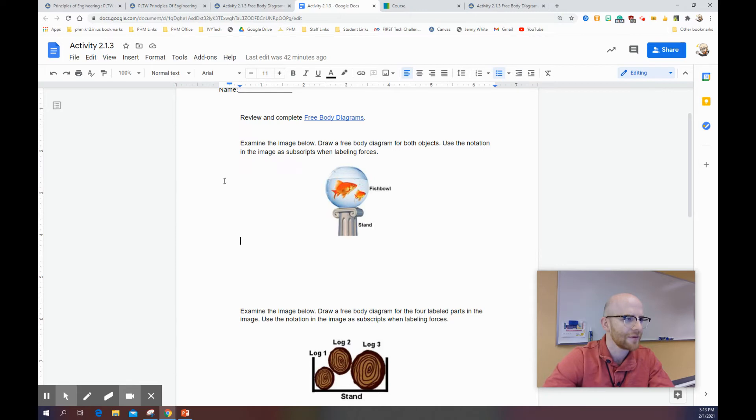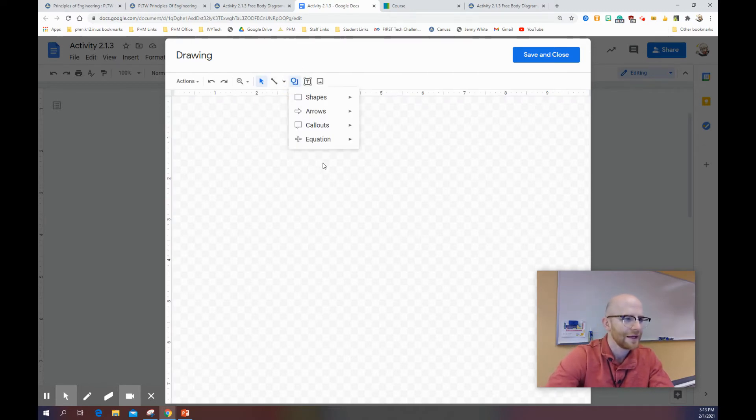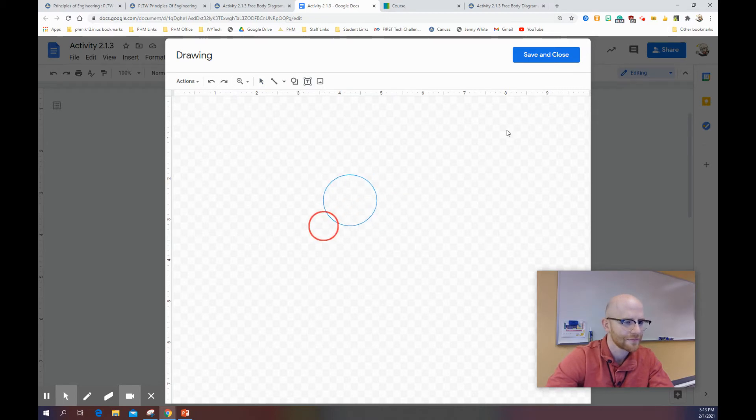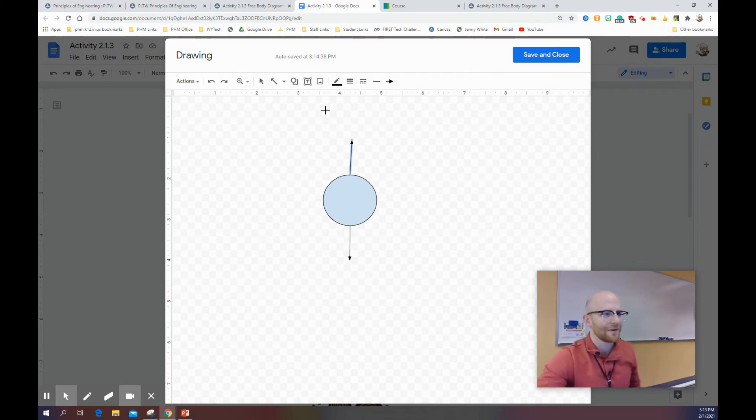So try your best to create a free body diagram using drawings. You can use the drawing feature within the Google Doc if that's better for you. Or you can sketch them and take a picture and submit the picture as well. Like upload the picture to the Google Doc, if that makes sense. So for example, right here is the Google Doc that you would submit. I have the pictures and you could do a drawing below.